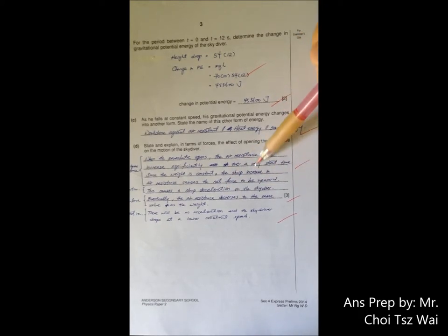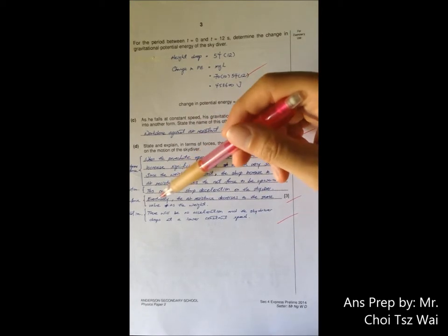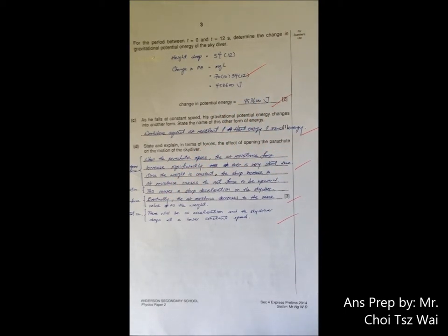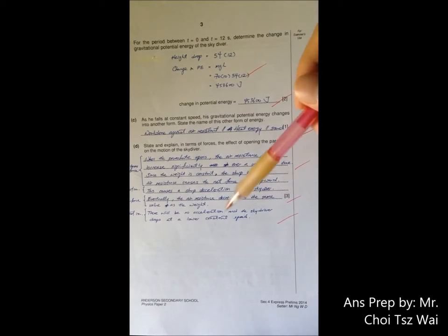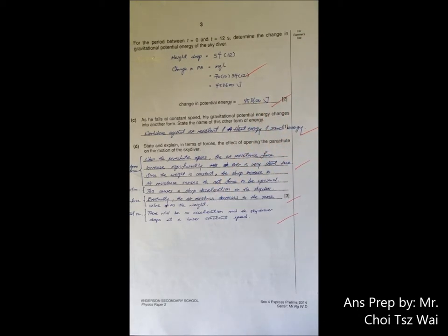Now, the first part of this answer takes care of the instance where the parachute was just opened. You need to continue and describe what would happen when that particular instance has passed. Once you have touched on the instance where the parachute just opened, continue. Eventually, the air resistance would decrease until it is the same value as the weight. When that happens, the net force will become zero.